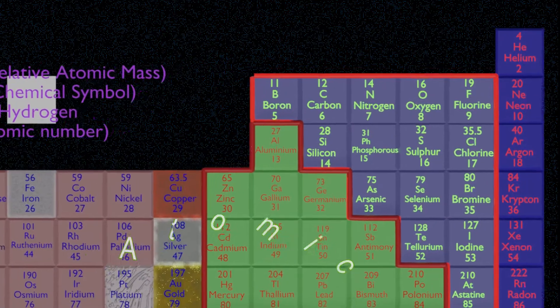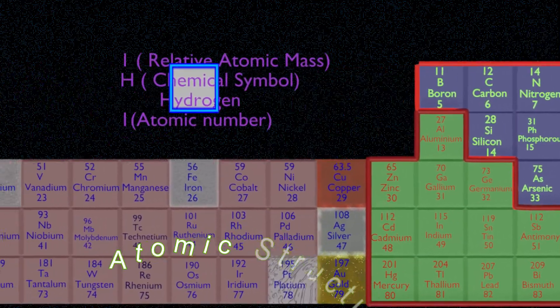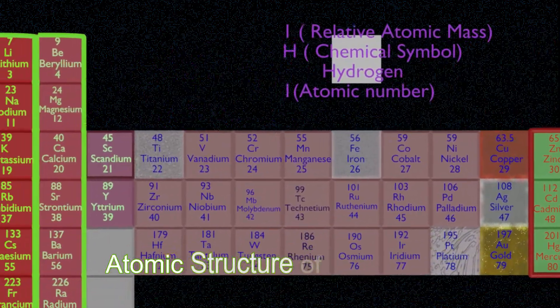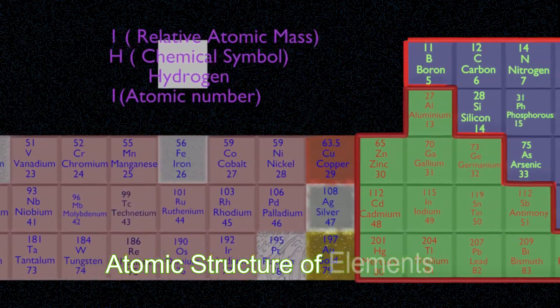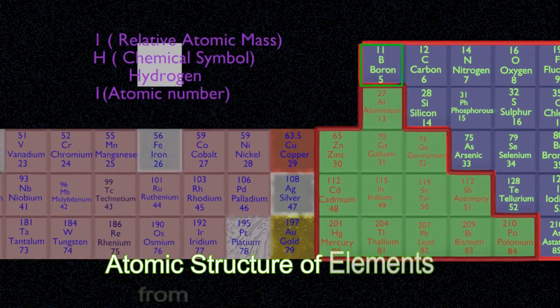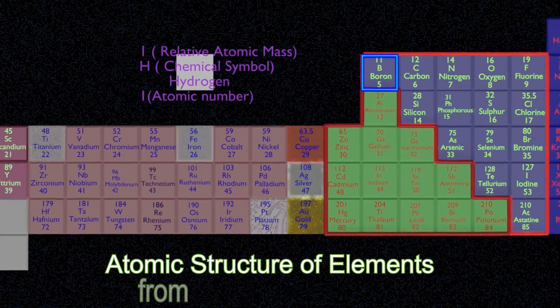In this video, we will learn about the atomic structure of elements in the periodic table, having atomic numbers from 1 to 10.